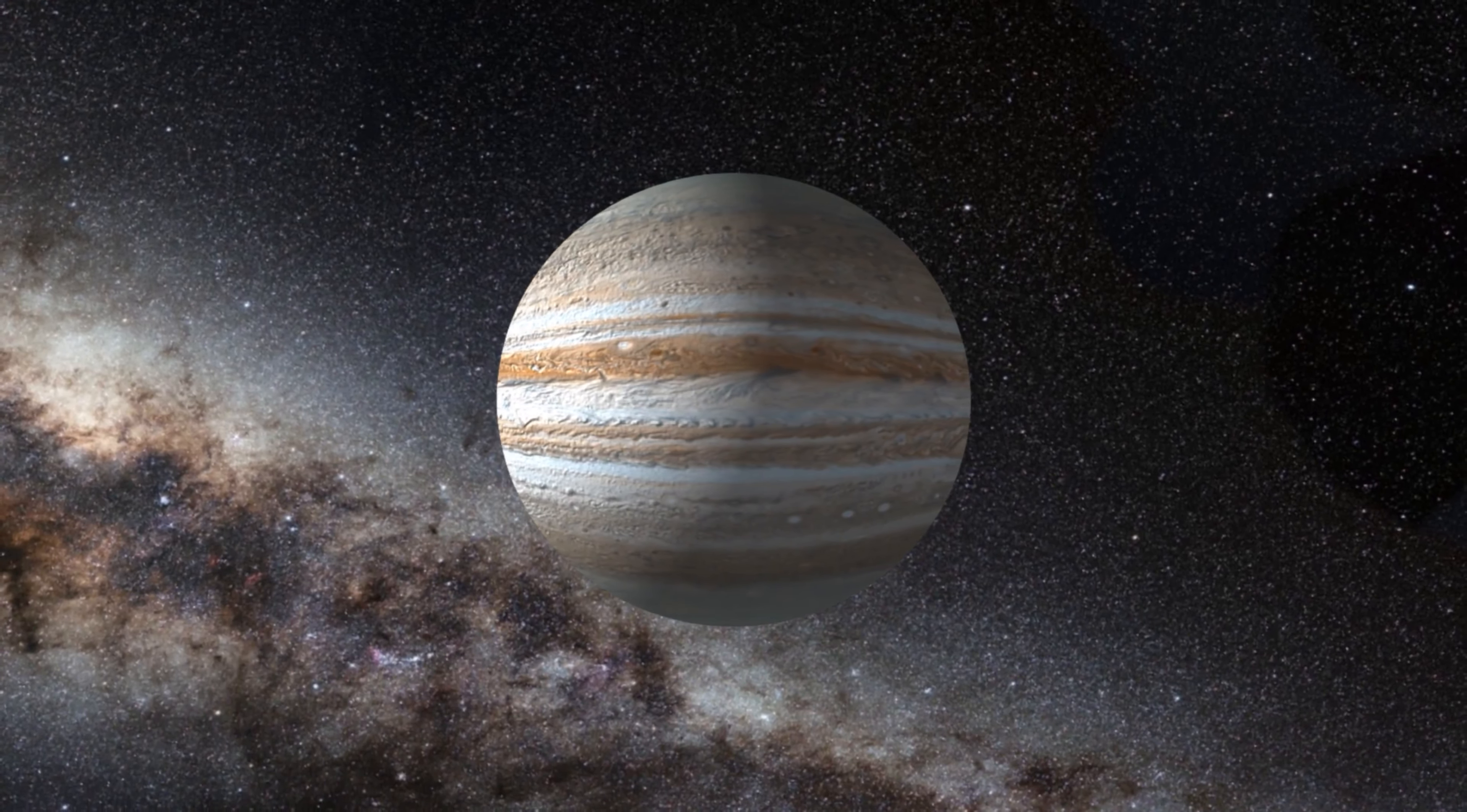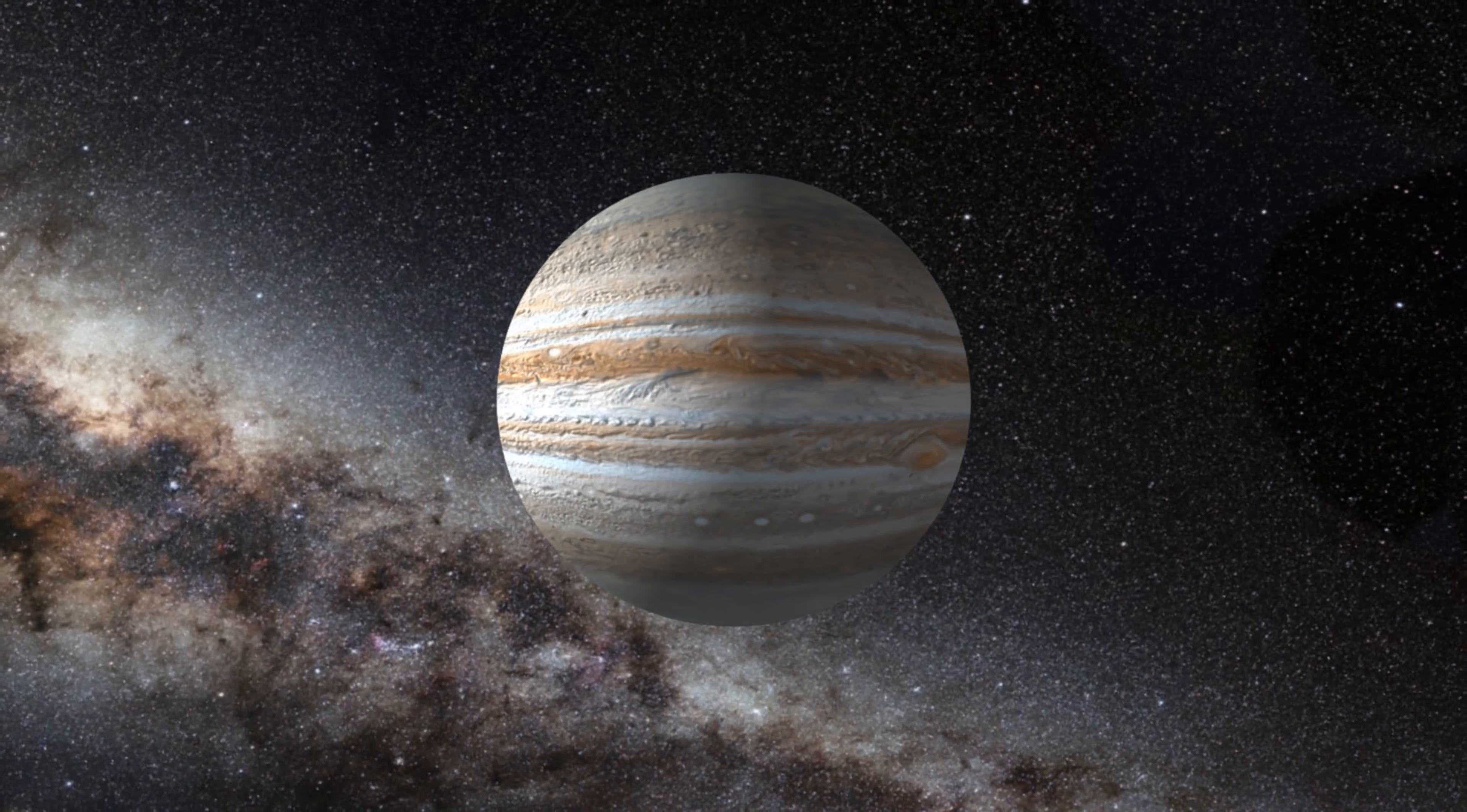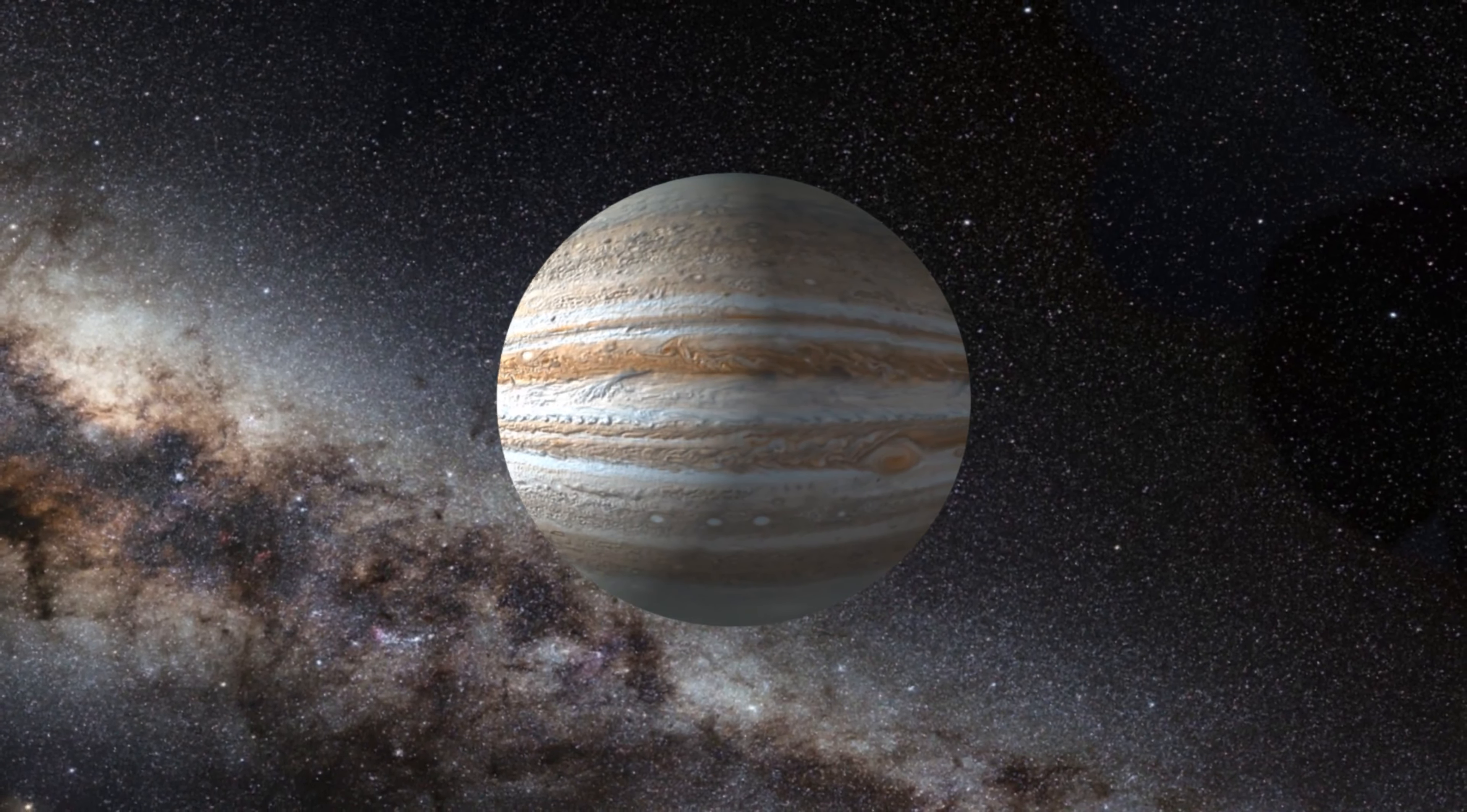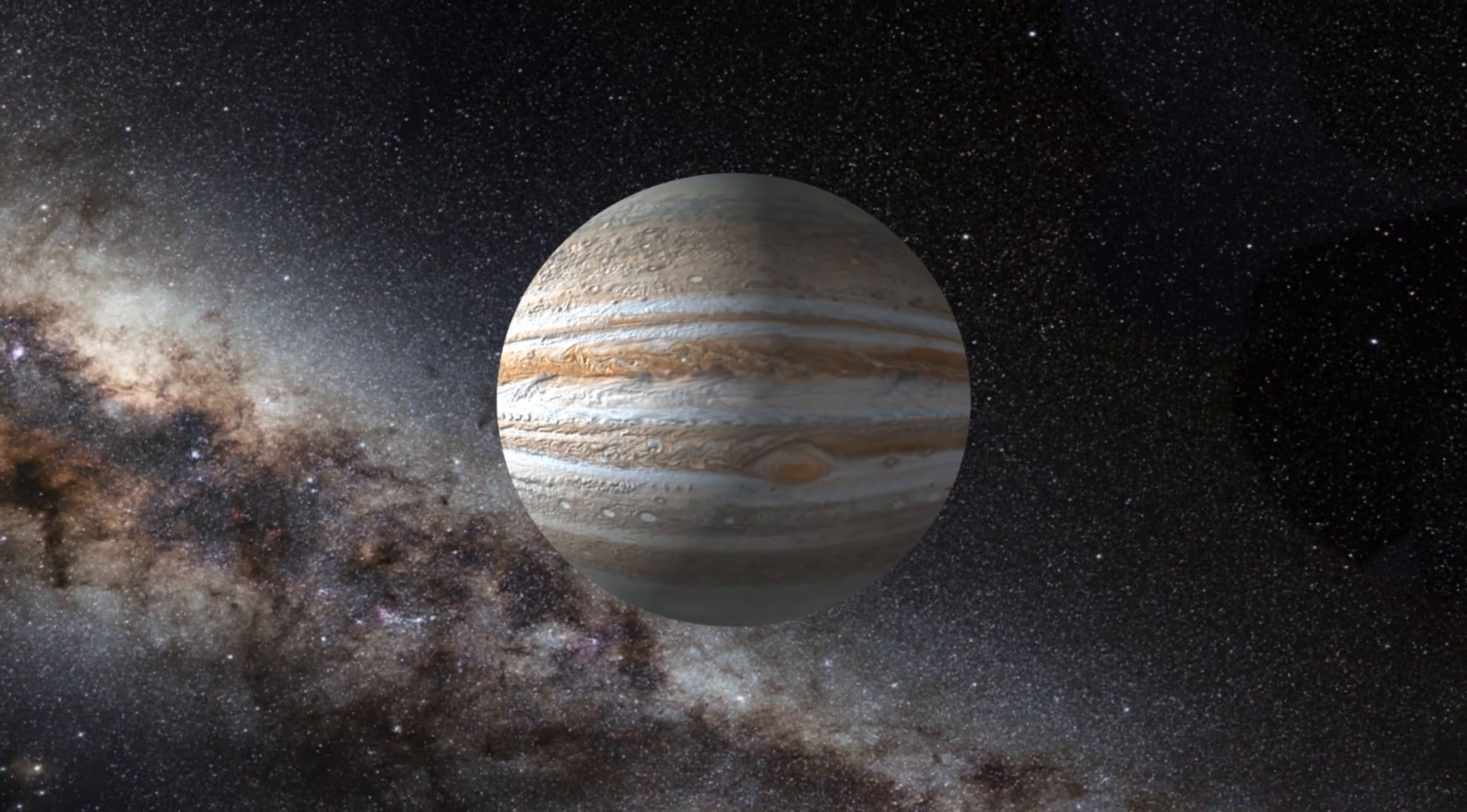In terms of size, Jupiter is 142,984 kilometers or 88,846 miles in diameter across its equator. If you just compare that to Earth, it's 11.2 times the diameter of Earth.